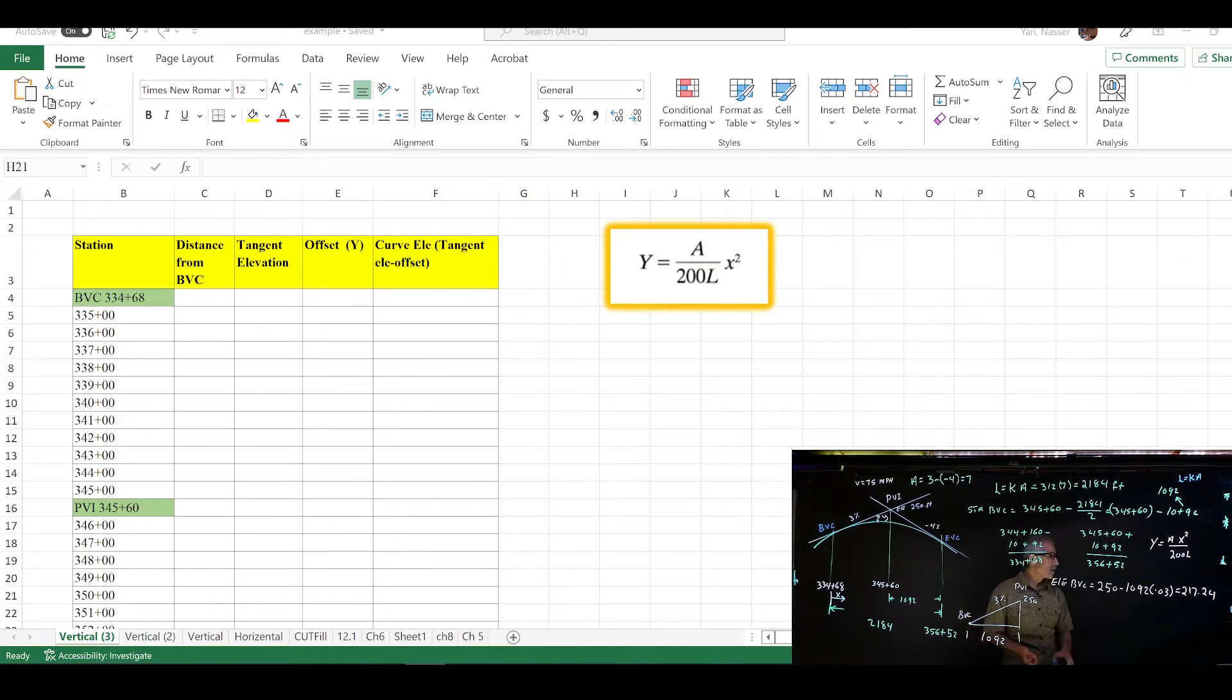So now we look at the Excel right here. Go ahead and make these four columns, make one for station, and then one heading distance from the BVC, tangent elevation, offset Y, and curve elevation. And go ahead and make your station start from BVC 334+68.